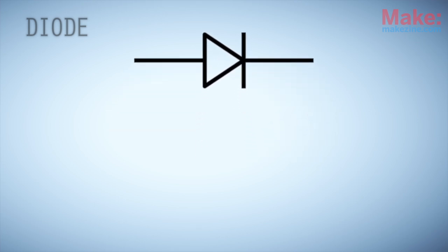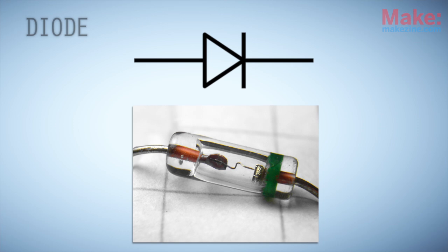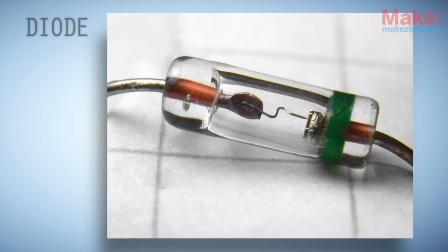This symbol also resembles the basic structure of a point contact diode, which uses a metal point held against a semiconductor chip.